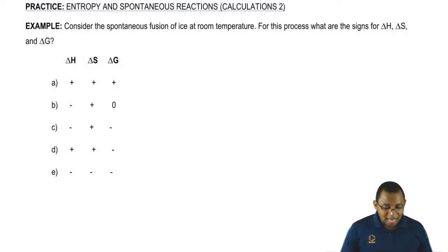Now, let's take a look at this example. It says, consider the spontaneous fusion of ice at room temperature. For this process, what are the signs for delta H, delta S and delta G?